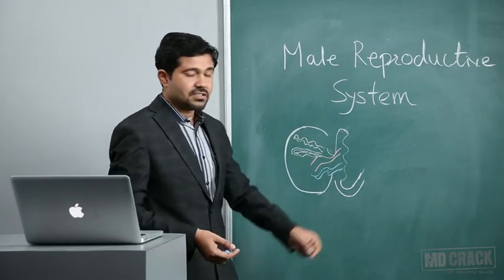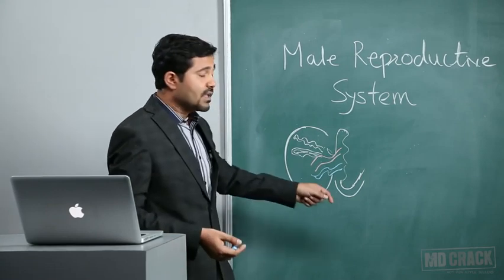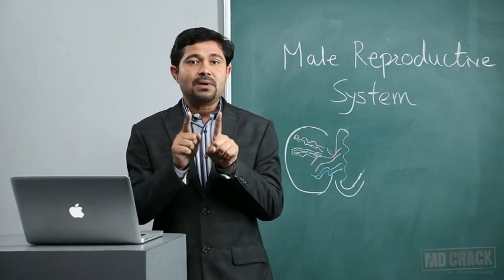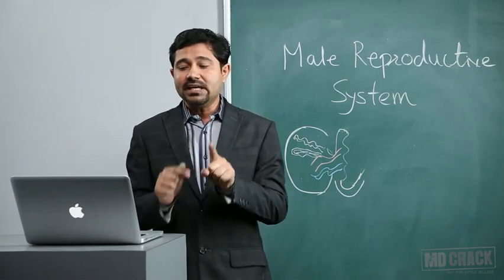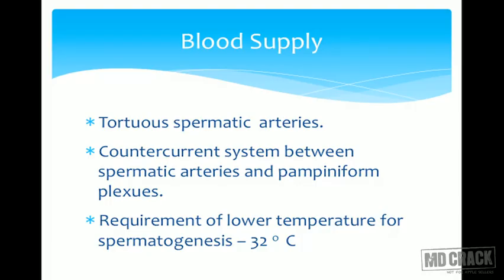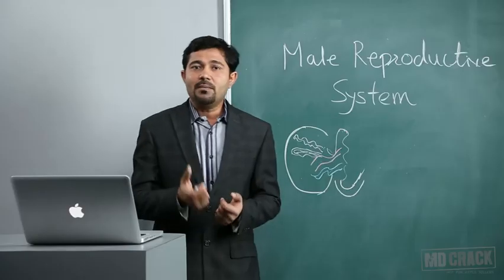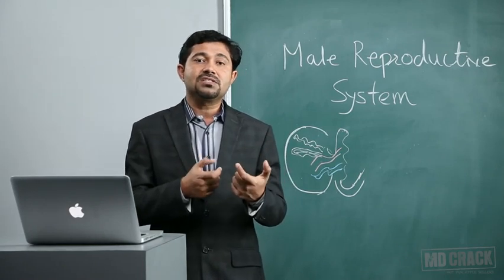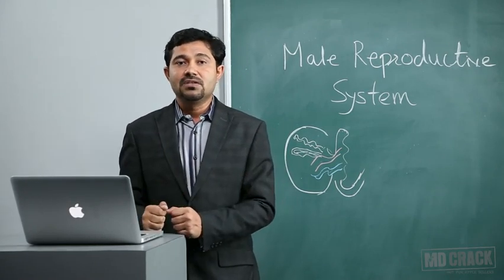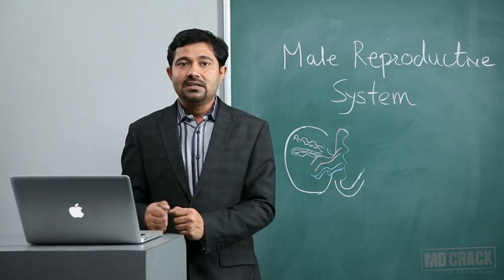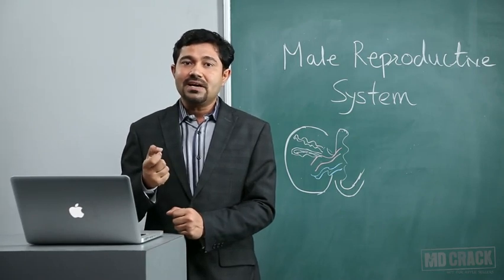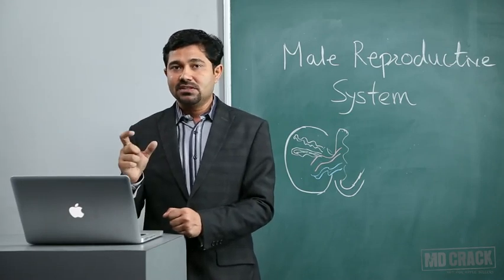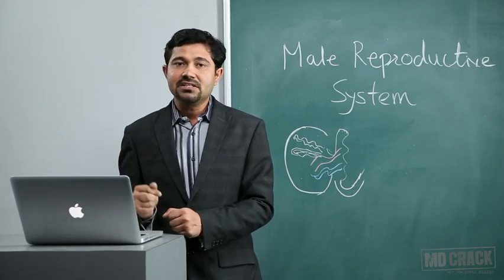This is the counter-current system — flows that are parallel to each other but in opposite directions. A common MCQ: what temperature is required for spermatogenesis? The temperature of the testis must be lower than body temperature. The temperature at which spermatogenesis is possible or maximal is 32 degrees Celsius, so the body must maintain this lower testicular temperature.